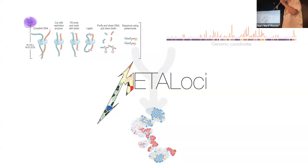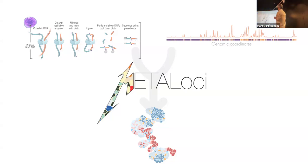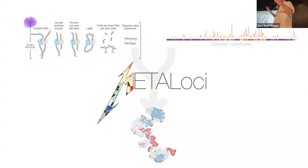What MetaLoci needs as input is Hi-C data and any signal in genomic coordinates — anything you can put in the genome coordinates can be used for running MetaLoci. In the case I'm talking about today, we use H3K27 acetylation, which is a decent proxy for activity: active enhancers that are activating genes, and active promoters.